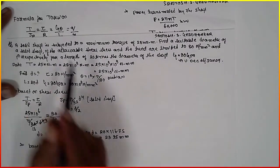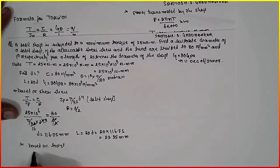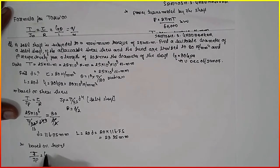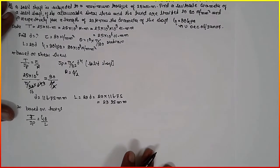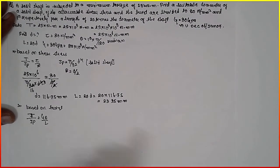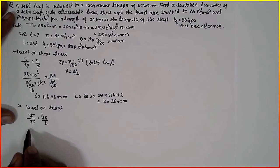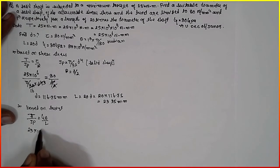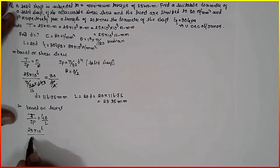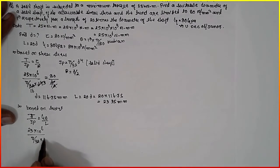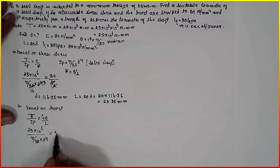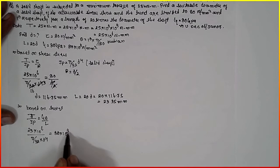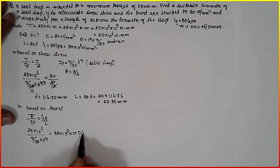Now second is T divided by Jp equals G theta by L. Now T is nothing but 25 into 10 raised to 6. Jp is pi by 32 D raised to 4. In place of L, substitute 20D.